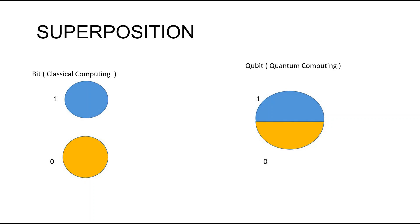In other words, something can be here, there, or up and down at the same time. Quantum superposition is a fundamental principle of quantum mechanics. It states that, much like waves in classical physics, any two quantum states can be added together and the result will be another valid quantum state. And conversely, every quantum state can be represented as a sum of two or more other distinct states.